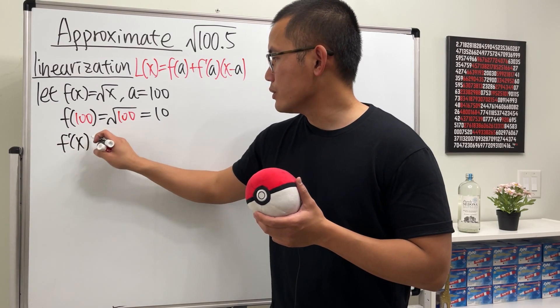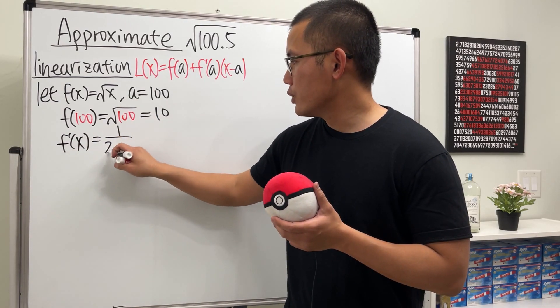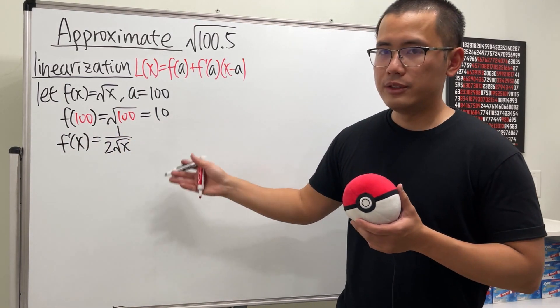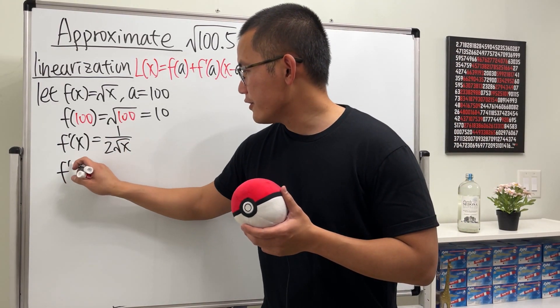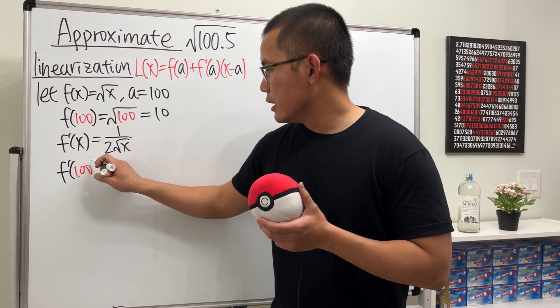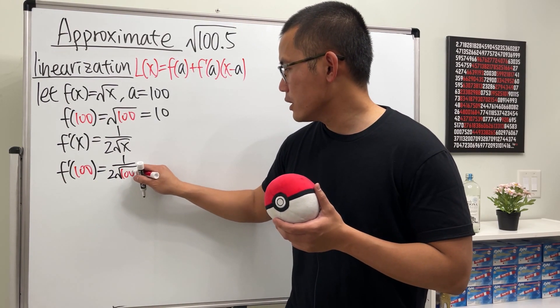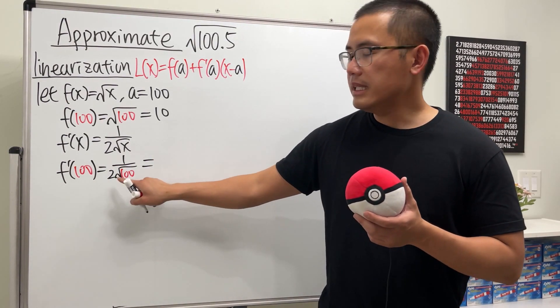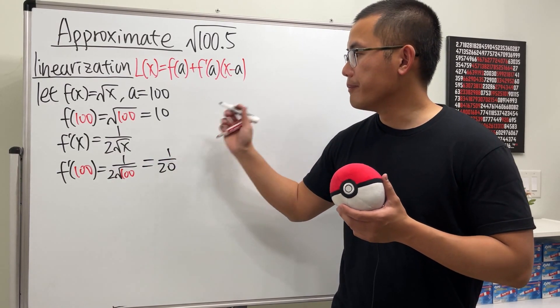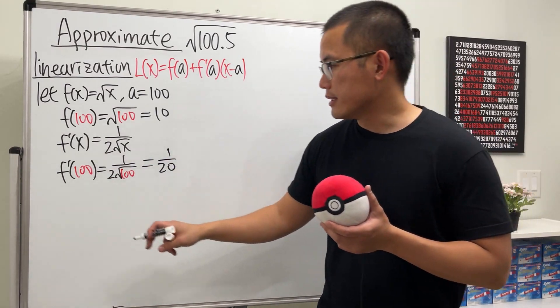And then let's get the derivative. The derivative of a square root is just 1 over 2 square root of x. And then just plug in 100 here. So f prime of 100, this right here is 1 over 2 times square root of 100. That's 10 times 2, so 1 over 20.